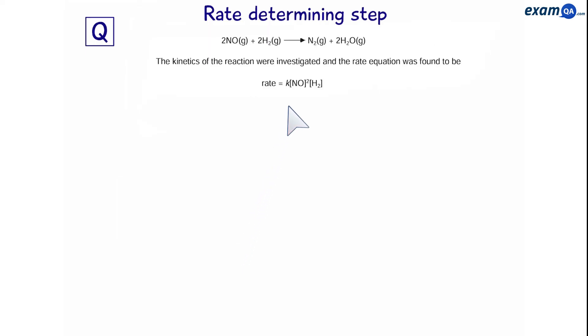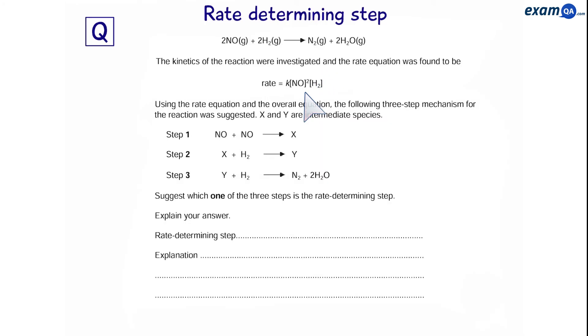Here's another question. The kinetics of the reaction were investigated and we have the following rate equation. So, we've been given a three step mechanism. Now, looking at the rate equation, we need to have two nitrogen monoxides and one hydrogen. None of the three steps have two nitrogen monoxides and a hydrogen.